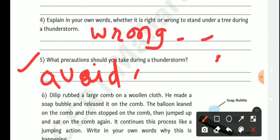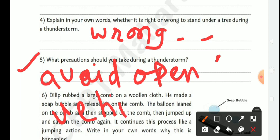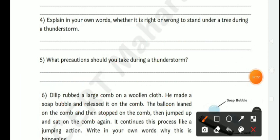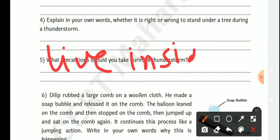Precautions during a thunderstorm: avoid open vehicles such as motorcycles, avoid being near a swimming pool or pond, and avoid using electronic equipment — stay inside the house.